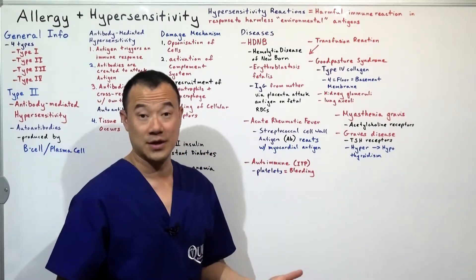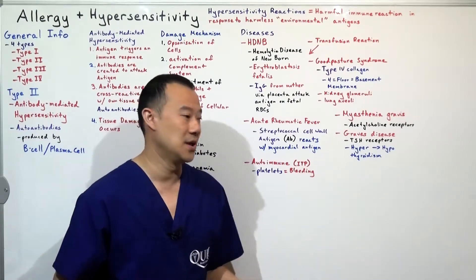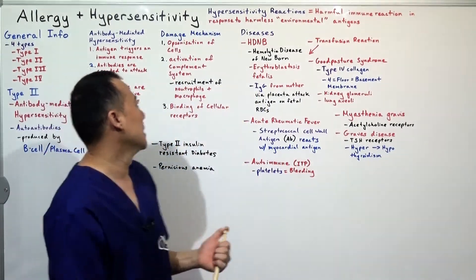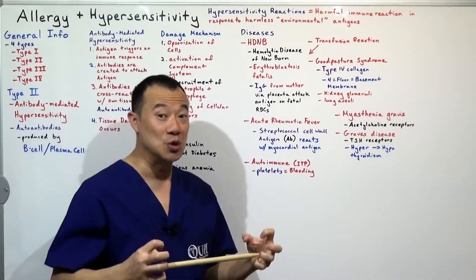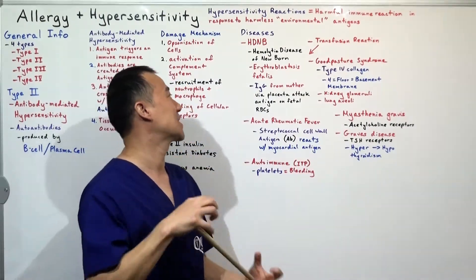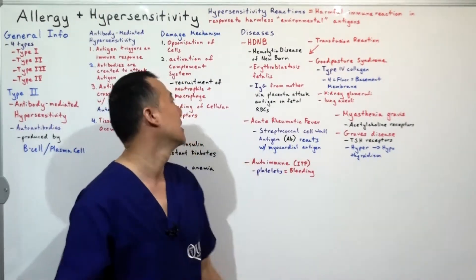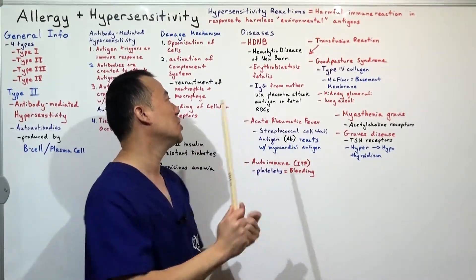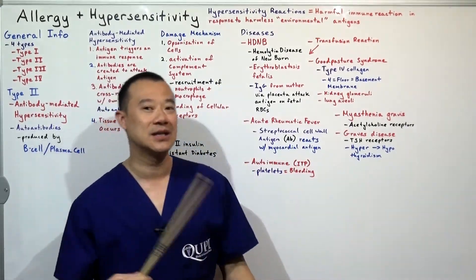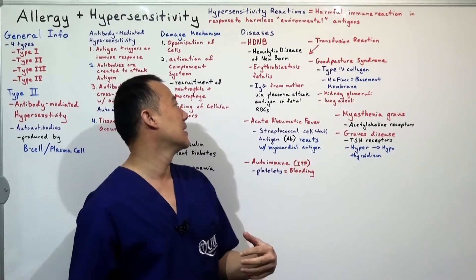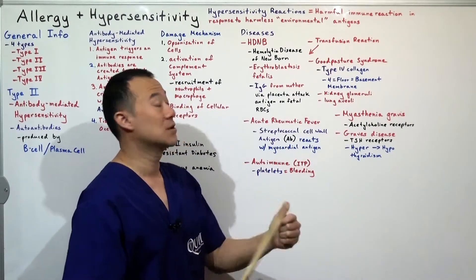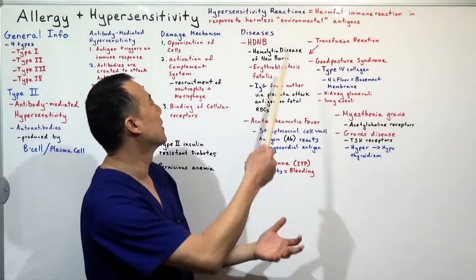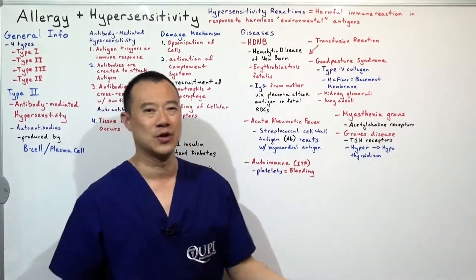Let's briefly go through some of the important diseases. HDNB — hemolytic disease of the newborn, also known as erythroblastosis fetalis — is where IgG from the mother crosses the placenta and attacks antigens on the fetal RBCs, causing hemolysis. This is not good for the child.